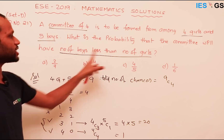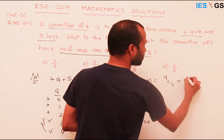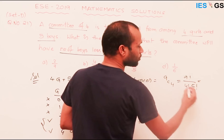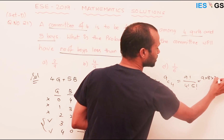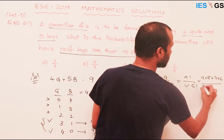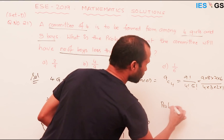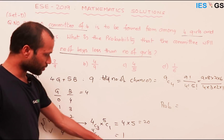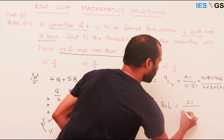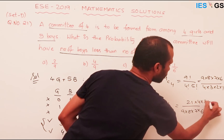The total number of possibilities satisfying the criteria is 21, whereas the total number of chances is 9C4. 9C4 equals 9 factorial divided by 4 factorial into 5 factorial. Taking out 5 factorial from 9 factorial, we are left with 9 × 8 × 7 × 6 over 4 factorial, which expands to 4 × 3 × 2 × 1.